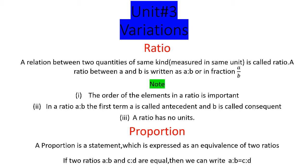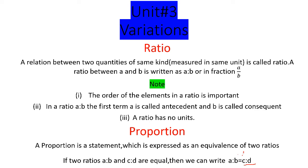Proportion ایک ایسی statement ہے جو دو ratios کی equivalence یعنی برابری کے طور پر بیان کی جاتی ہے۔ اگر دو ratios a:b اور c:d برابر ہوں تو ہم لکھ سکتے ہیں a:b = c:d۔ یہ چار points proportion کو show کرتے ہیں اور exercise کے آخری question میں یہ بات واضح ہوگی۔